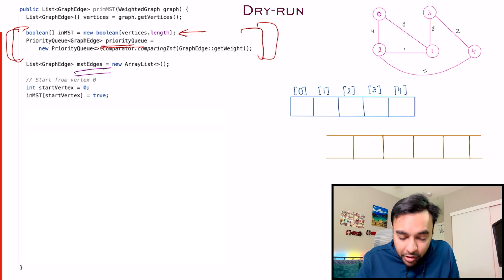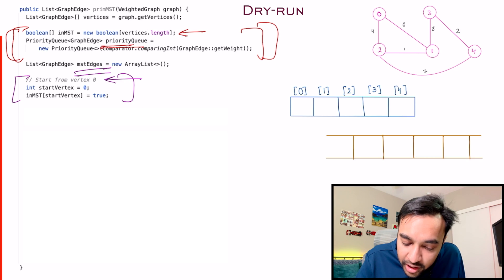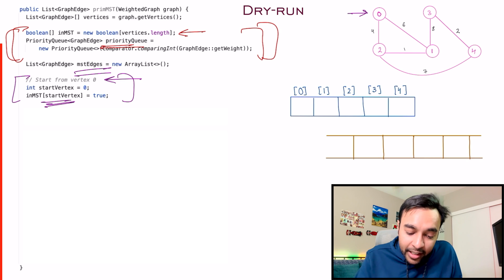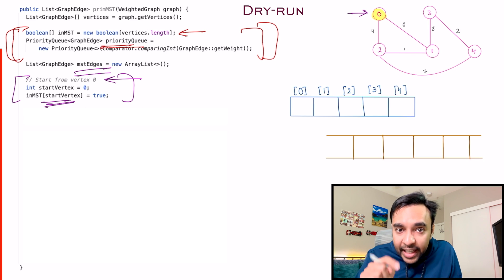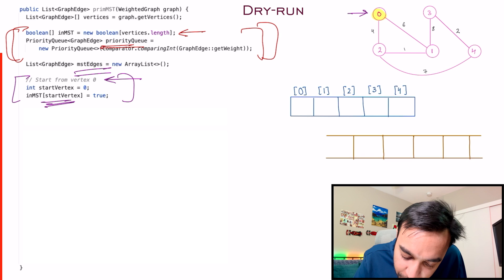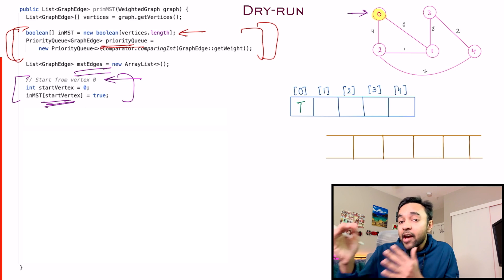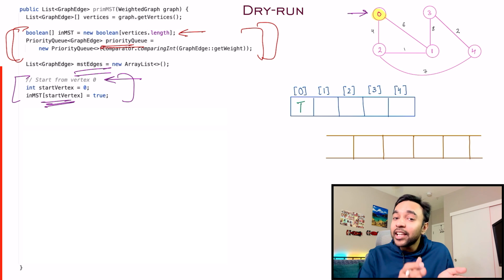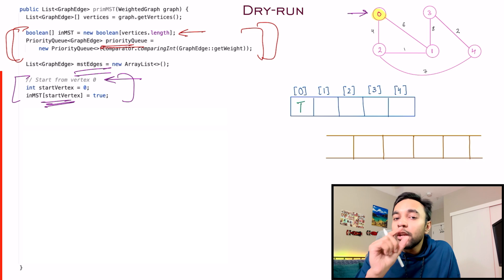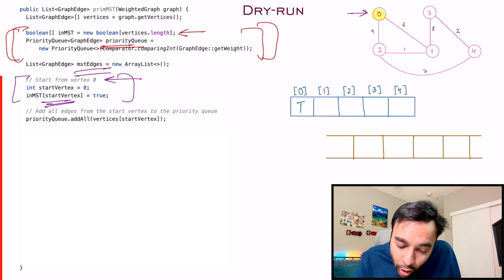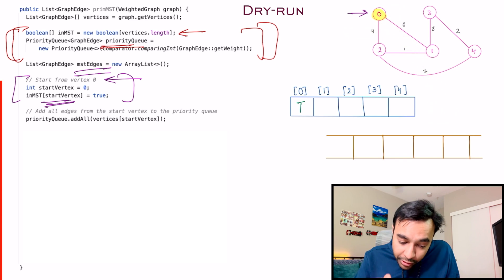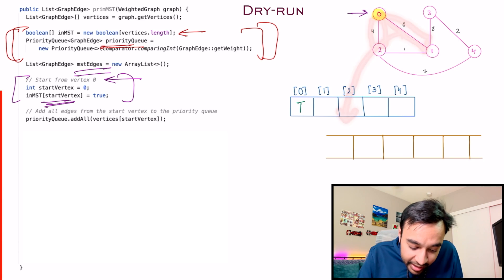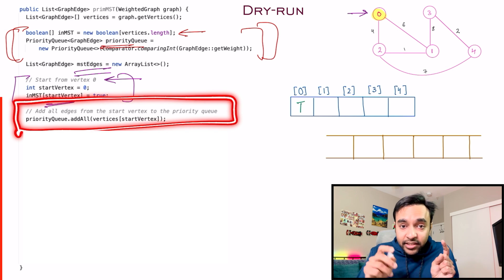We can start from any vertex. Right now I am starting from vertex number 0. I add this starting vertex to my set, marking that I started with node 0. In my boolean array I mark this position as true — this helps me quickly find out if I have traversed this node or not. If it is true, I have already covered it; if it is false by default, I have not. I have now marked node 0 as visited. The next step: add all of its edges to your priority queue. So edge 4 and edge 6 get added.